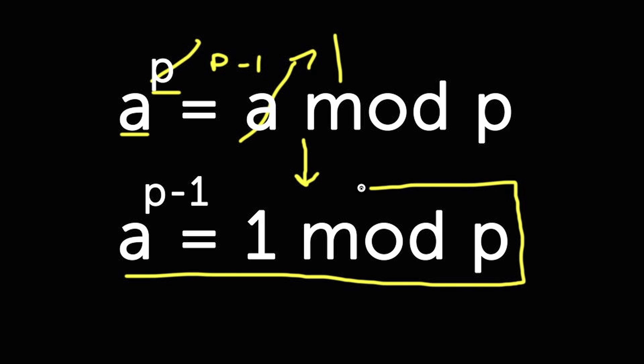Now, because a and p share no common factors since p is a prime, we can use the cancellation law, and you'll sometimes see this written as a to the power of p minus 1 is 1 mod p. And remember, we can only do this because the greatest common divisor of a and p equals 1.